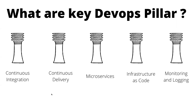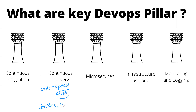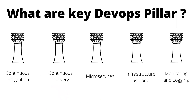The next pillar is continuous delivery. What is the difference between continuous delivery and continuous integration? If you have your code updated, it doesn't mean you have to deploy — it is not a must. But if you want, you can create a pipeline where the moment the code is updated it gets deployed. Famous CD tools include Jenkins, Harness, and GitHub Actions.